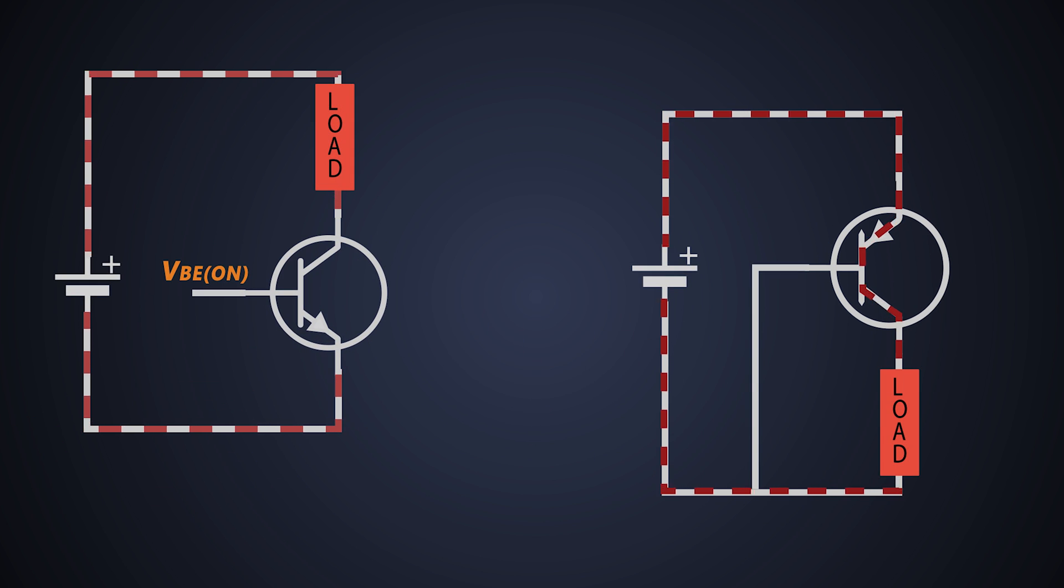One more important thing about BJT is it is a current control device. What does that mean? The very simple answer is the amount of current flowing through the base decides how much current should flow through the collector. Again remember the analogy. The flow of water in the horizontal pipe controls the flow of water in the vertical pipe.